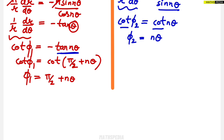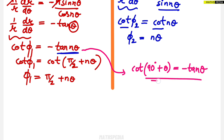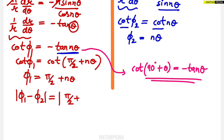After getting φ₁ and φ₂ values, we apply the angle of intersection formula: φ₁ − φ₂ = (π/2 + nθ) − (nθ) = π/2. The nθ terms cancel, giving π/2. As stated earlier, if φ₁ − φ₂ = π/2, we can conclude that the curves intersect each other orthogonally. This completes the first method.